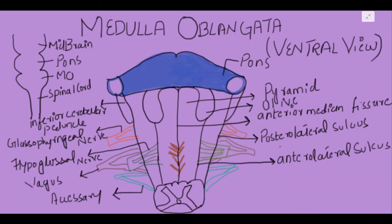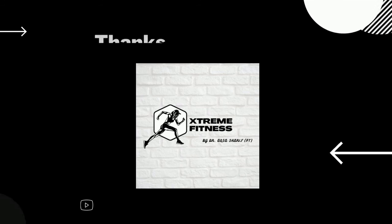So there are four cranial nerves from the medulla oblongata: 9, 10, 11, and 12 — the glossopharyngeal, vagus, accessory, and hypoglossal. The 12th arises from the anterior lateral sulcus, while the remaining three arise from the posterior lateral sulcus. In the middle of the ventral medulla is the anterior median fissure; lateral to it are the pyramids, then the olives, and lateral to the olives is the inferior cerebellar peduncle. This concludes the ventral aspect of the medulla oblongata.